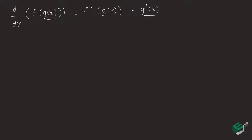To get to know the chain rule better, let us start with an example. Let us say we are given the function y is equal to 8x squared plus 5, cubed. To solve for this, we can get the derivative of this function using the chain rule.